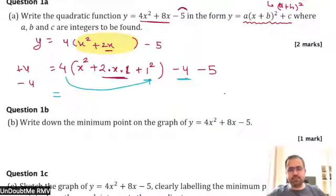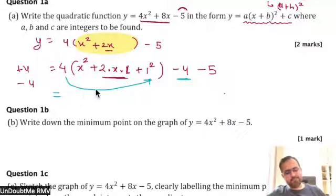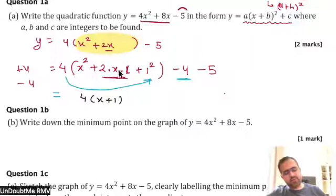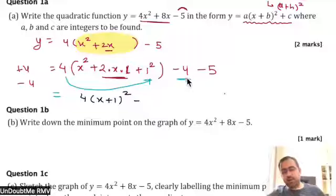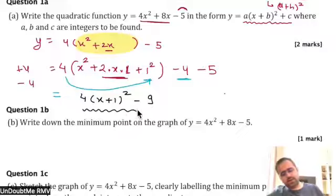Student explains: a is 4, and whatever is in the bracket is x plus b squared expanded. So a squared plus 2ab plus b squared can be written as a plus b whole square. Teacher confirms, and adds: then minus 9 will be minus 9. Now we are going to compare it with the form a times x plus b whole square plus c.